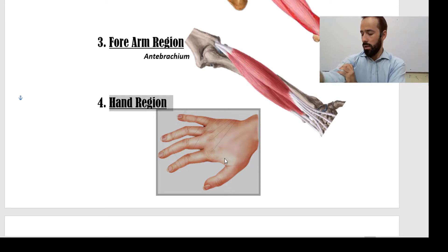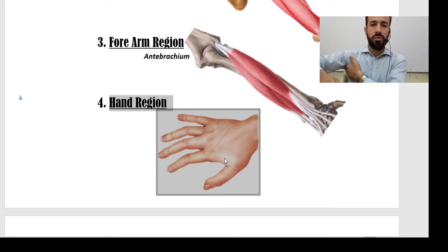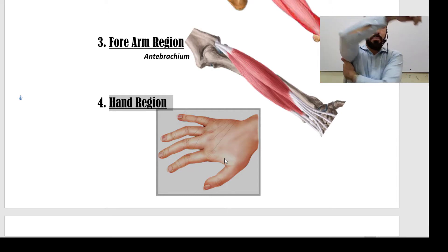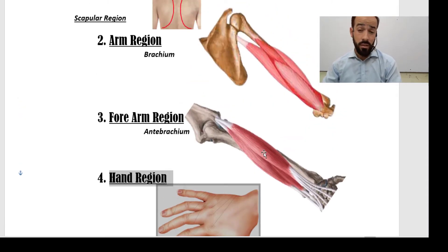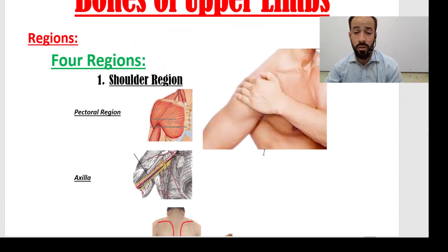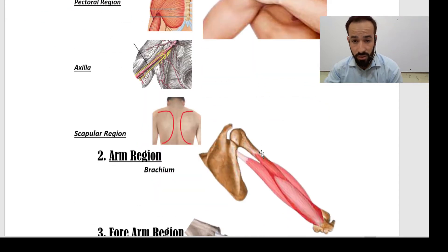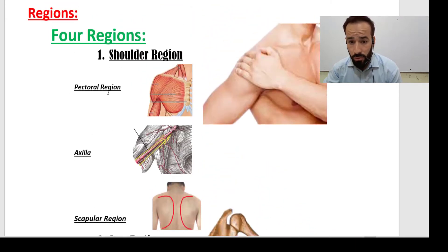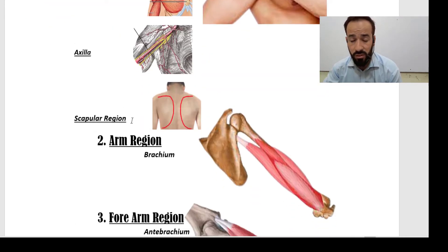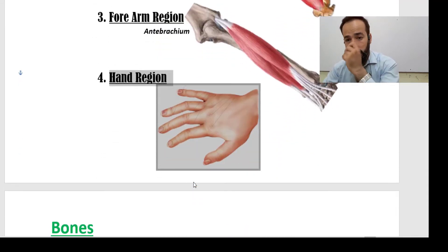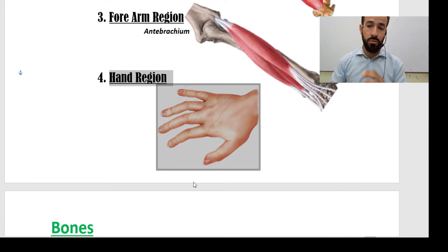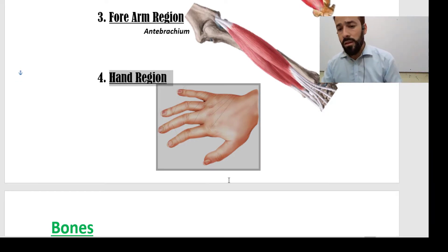Here you have your pectoral region, your axilla, and behind there is your scapular region. So your upper limb can be divided into six regions: the pectoral region, the axillary region, the scapular region, the arm region, the forearm region, and the hand region. These are the divisions of the upper limb.